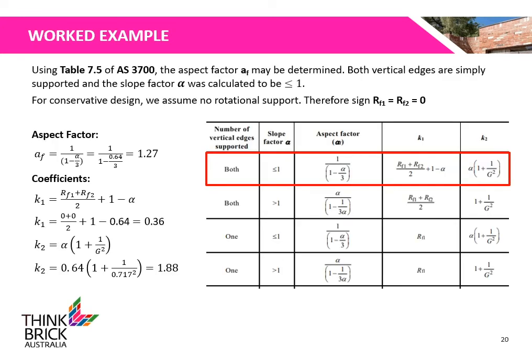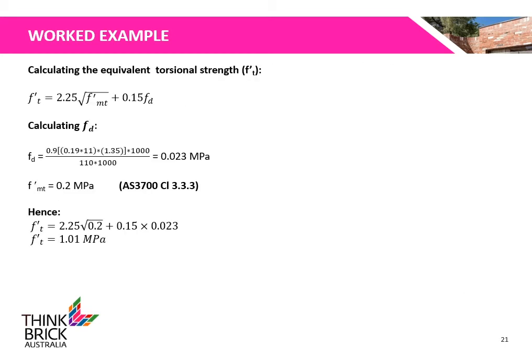Using Table 7.5 of AS3700, the aspect factor AF may be calculated. Both vertical edges are simply supported and the slope factor alpha was calculated to be less than 1. For conservative design, we assume no rotational support, therefore RF1 and RF2 are 0. The aspect factor is calculated to be 1.27 and the coefficients K1 and K2 are calculated to be 0.36 and 1.88 respectively. The torsional strength equation is a function of the flexural tensile strength of the masonry and the minimum design compressive stress on the bed joint, which is calculated to be 1.01 MPa.